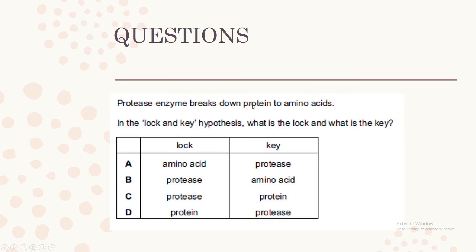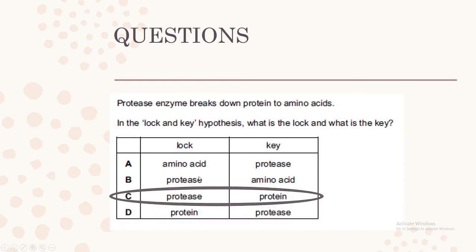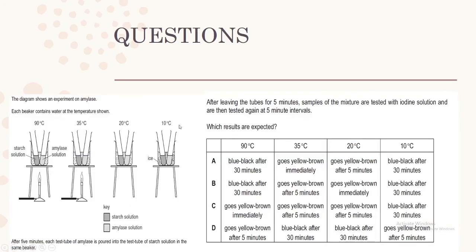Protease enzyme breaks down protein into amino acids. In the lock and key hypothesis, what is the lock and what is the key? The lock is the protease enzyme and the key is the protein substrate — amino acids are the product, but protein is the substrate.